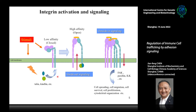Then the integrin can bind to their ligands in high affinity. We call it inside-out signaling — meaning the signal from inside goes out and induces the conformational change of the extracellular domains of the integrin. The ligand binding can further induce conformational change of integrins and also trigger clustering of integrins on the plasma membrane, which induces activation of downstream signals that regulate cell spreading, migration, cell survival, and so on.